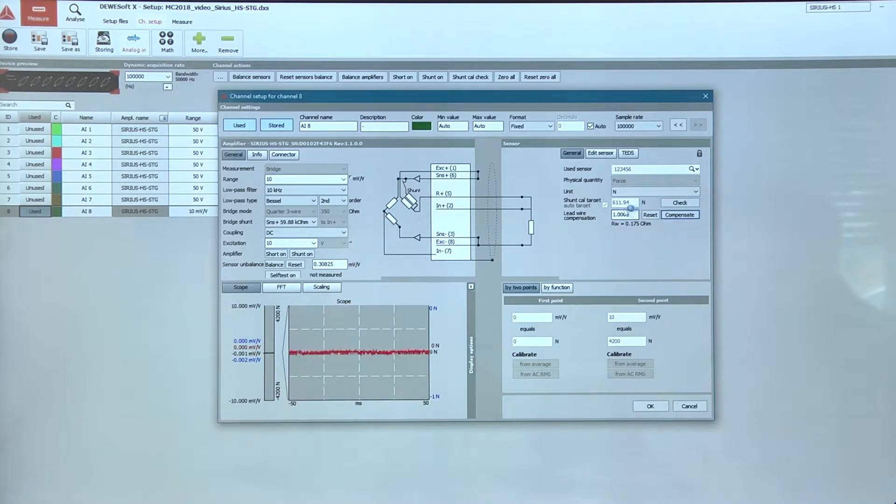Here you can see this factor is nearly one because the wires are very short and the corresponding resistance is very low. Now let's see what is the resistance of our wires with the adapter.